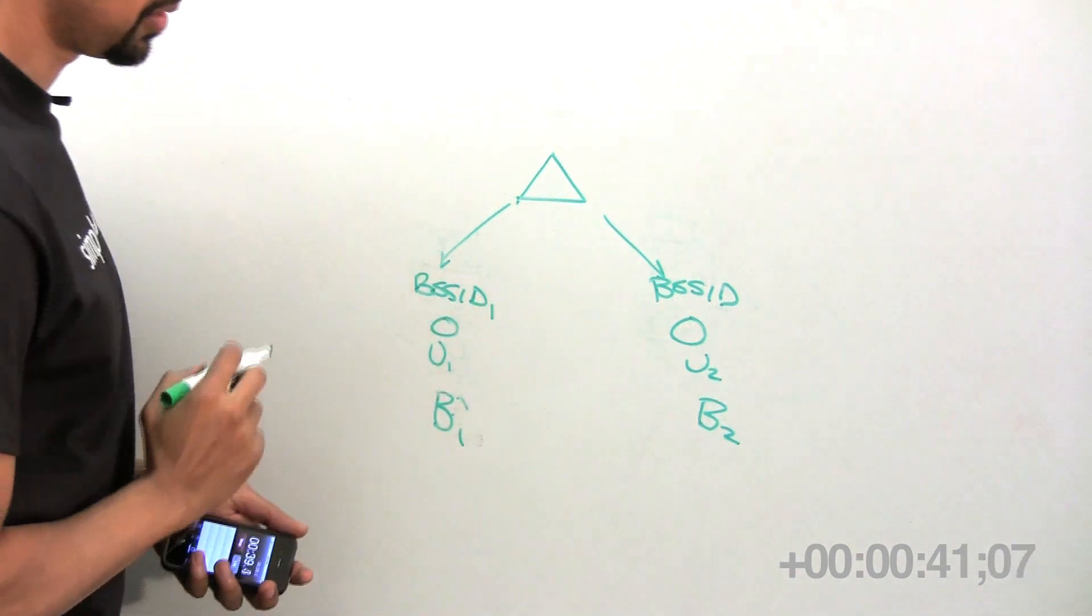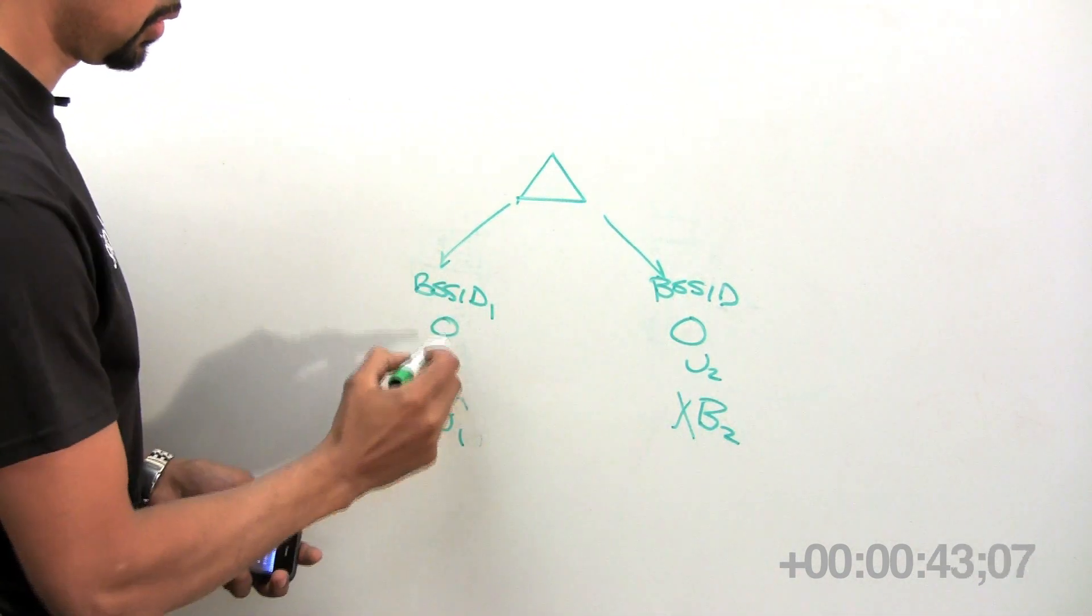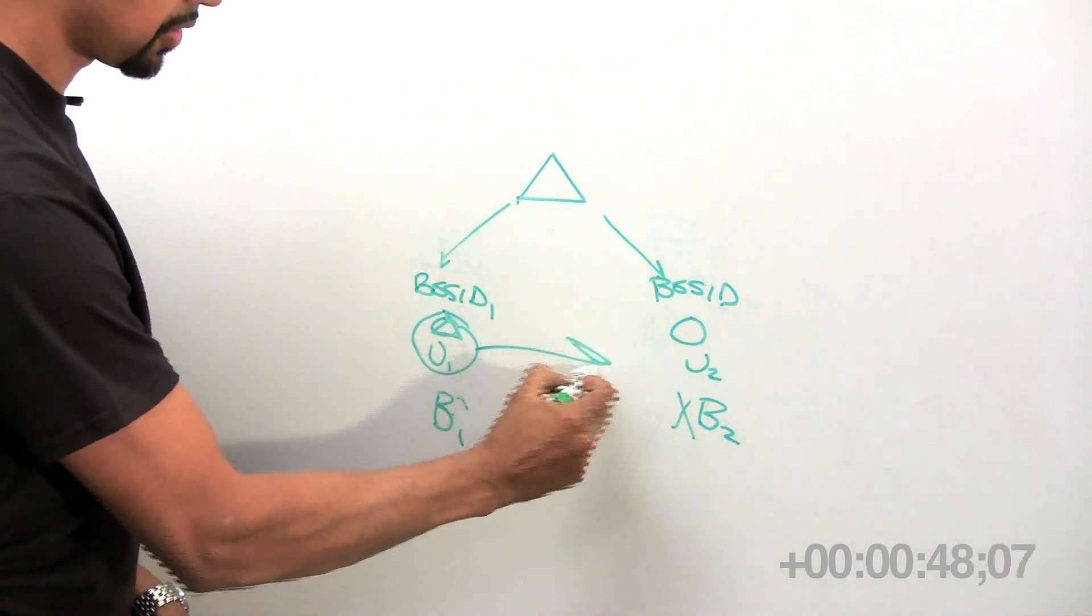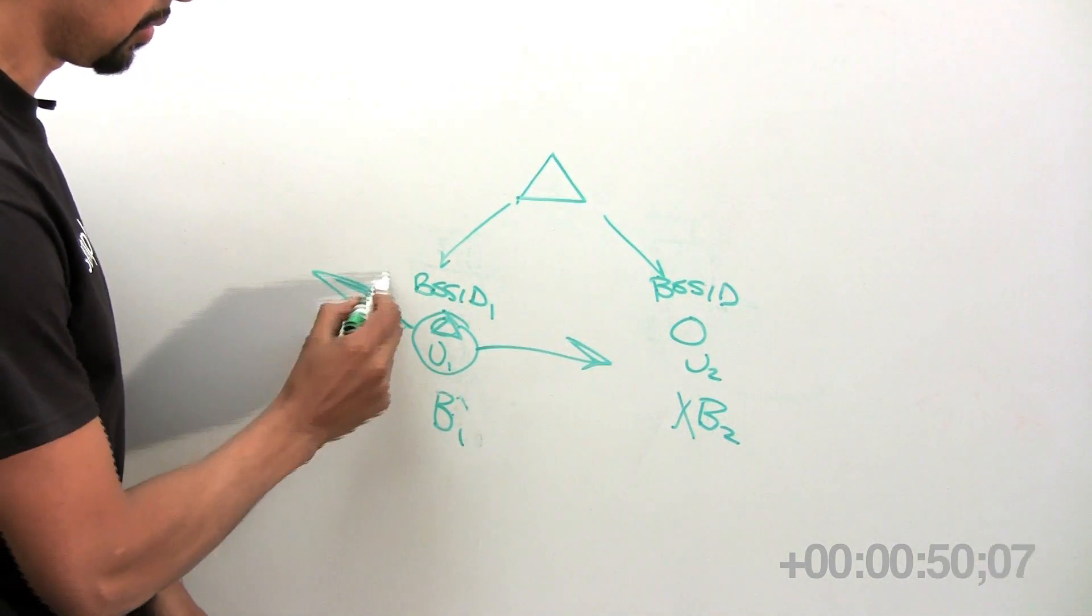This broadcast key has nothing to do with that broadcast key. That means this client, even if he acts like the AP, can never launch an attack on any other client on the network.